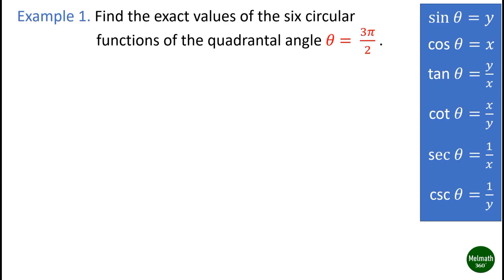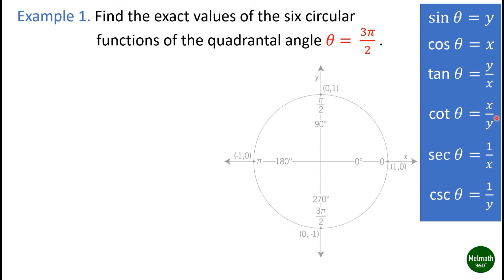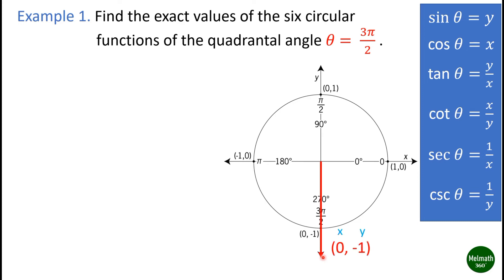Example one: find the exact values of the circular functions of the quadrantal angle theta equals three pi over two. Locate three pi over two on the unit circle and identify the coordinates of its terminal point. The point at three pi over two equals (0, -1); the x-coordinate is zero and the y-coordinate is negative one.